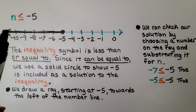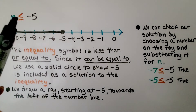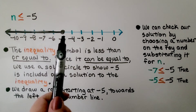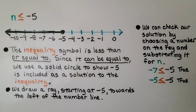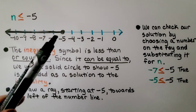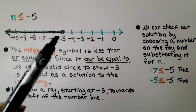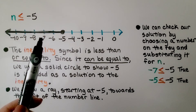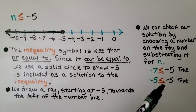This inequality is n is less than or equal to negative 5. The inequality symbol is less than or equal to. And since it can be equal to, we use a solid circle to show negative 5 is included as a solution. We draw a ray starting at negative 5 towards the left of the number line, going towards the lesser numbers. We can check our solution by choosing a number on the ray — if we choose negative 7, that's less than negative 5, and if we choose negative 5, that is equal to negative 5. So these are both true.